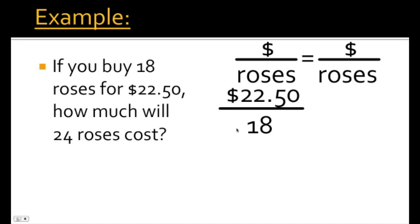We pay $22.50 for 18 roses. The other side will have to be set up the same way, but we're missing something — we're trying to find the cost. We have the number of roses, which is 24, so that goes on the bottom. We put a variable in for our numerator, giving us c over 24. It's important to choose a variable that applies to the problem. Here we chose c, which stands for cost.